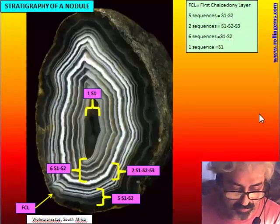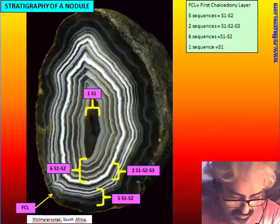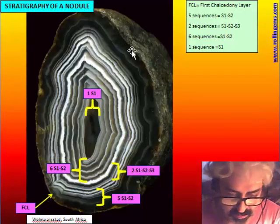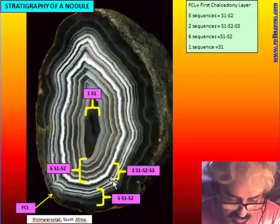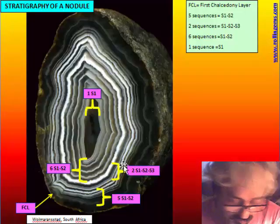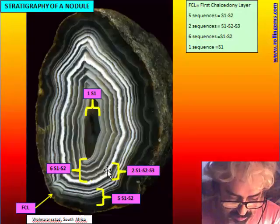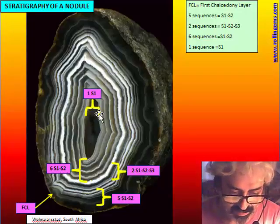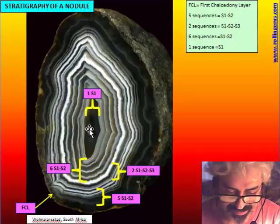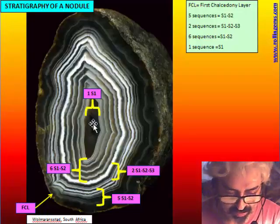Another agate from a South African location. We can identify the first chalcedony layer — almost black. Then there are five sequences S1, S2. Then two sequences that are complete: S1, S2, S3 with some quartz crystals in the top. We can see some undulated band here. All this work was done with the microscope. At the end we have six sequences S1, S2, and then at the center there is one S1, a band of globular chalcedony. This is probably not the end because the cut is not crossing the center of the agate.